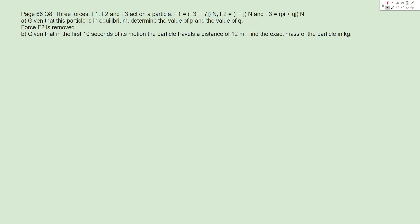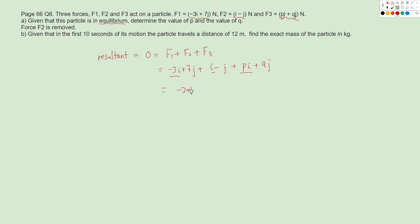Question 8: three forces F1, F2, F3 all act on a particle in equilibrium. We want to find p and q. Because the particle is in equilibrium, the resultant force is zero. F1 = −3i + 7j, F2 = i − j, F3 = pi + qj. Adding components: i gives (−2 + p) = 0 so p = 2; j gives (6 + q) = 0 so q = −6.